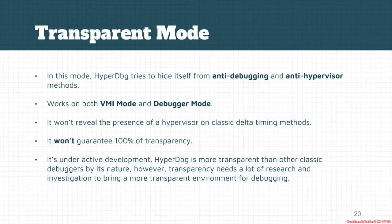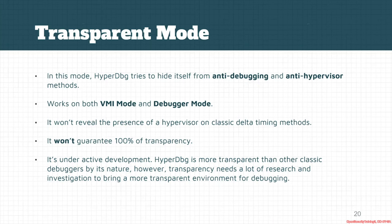Transparent mode is completely different from the previous modes. HyperDBG in this mode tries to hide itself from anti-debugging and anti-hypervisor methods. You can start transparent mode in both VMI mode and debugger mode — there's no limitation. It won't reveal the presence of a hypervisor through classic delta timing methods, classic side channels, CPUID, or possibly other instructions. It won't guarantee 100% transparency, but it makes it substantially harder for anti-debugging and anti-hypervisor methods to detect this debugger. It's under active development — every time a new detection technique is found, we try to bypass it.